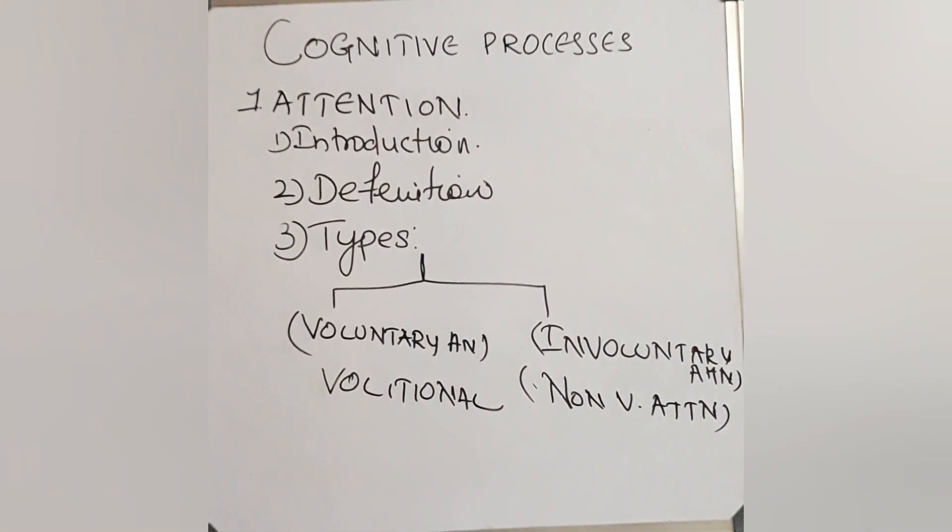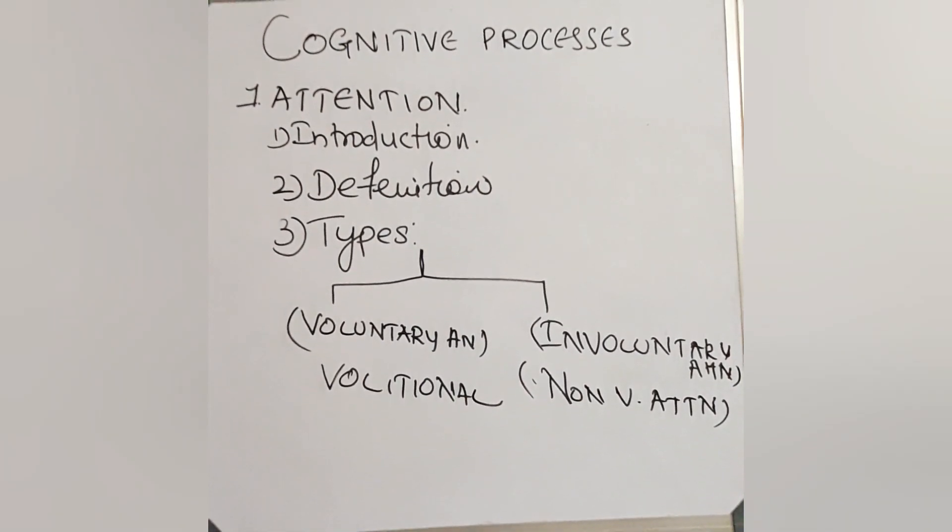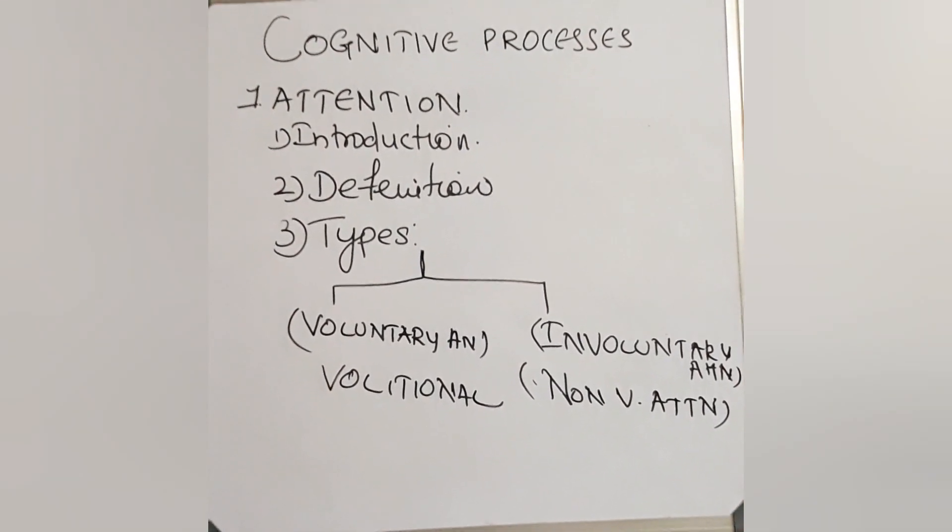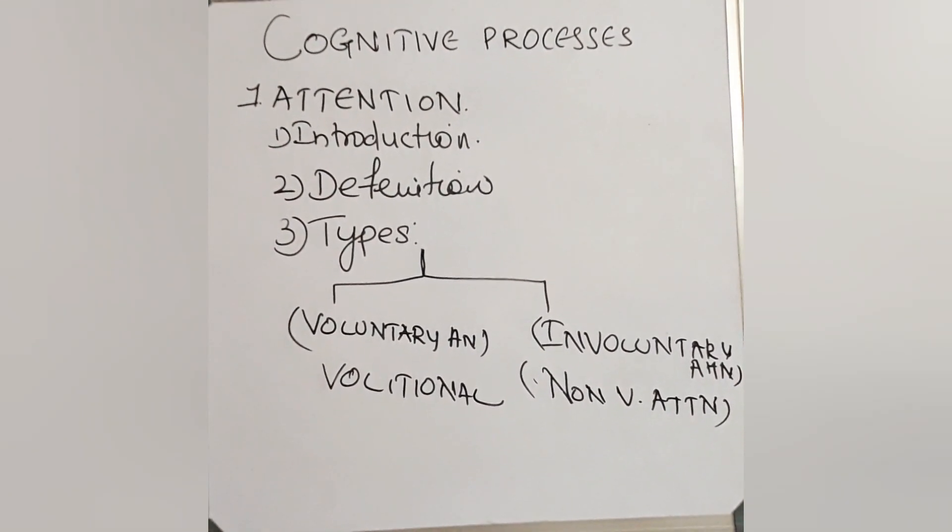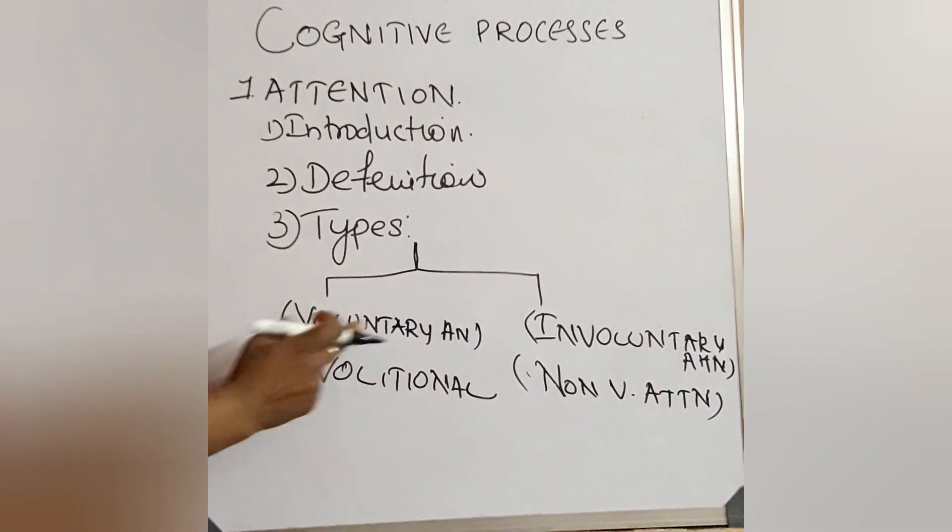We are giving the concentration or attention to solve the problem. For an example, especially we can take mathematical problems. We are giving more attention to find a solution. Somebody is asking question. We are preparing in our mind to give an answer. That is called voluntary attention.